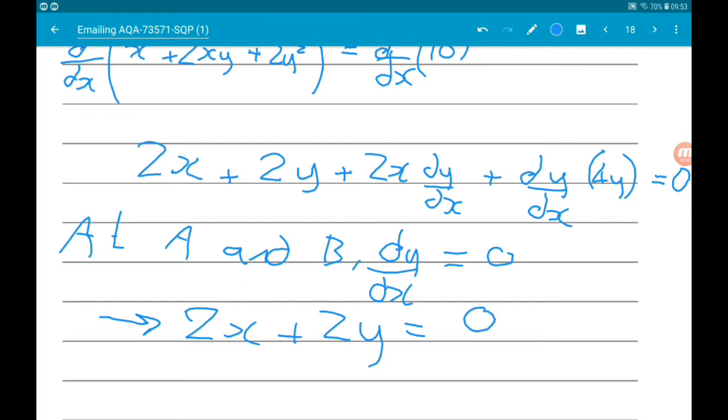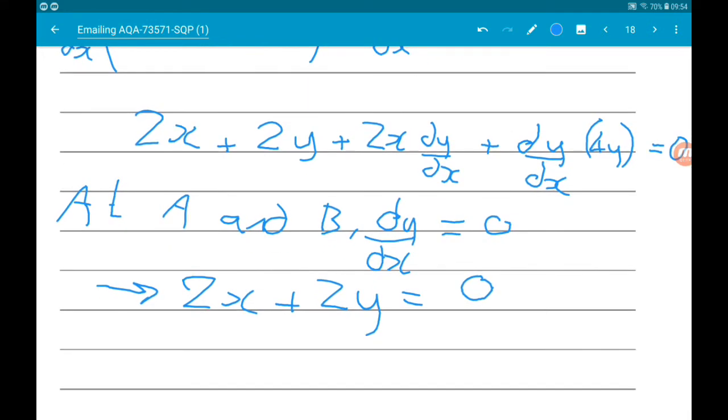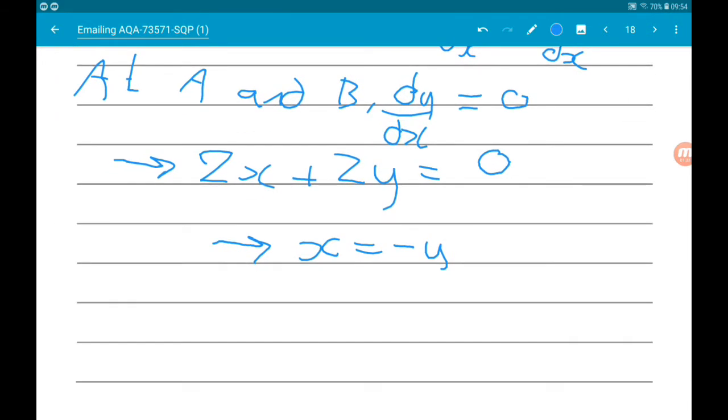Now remember what we are trying to find is the y values at each point A and B. So what we can do from this is find what x is in terms of y and then substitute that into the original equation of the sculpture. So from this we can get 2x is equal to -2y, so x is equal to -y. So now we're going to sub x equals -y into the original equation.